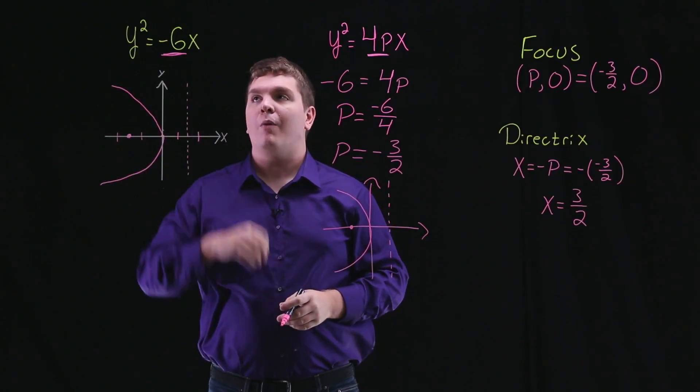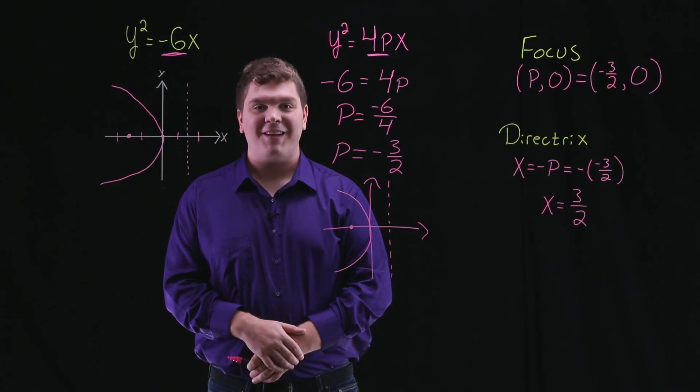So there we have the graph of our parabola, y² = -6x. Thank you.